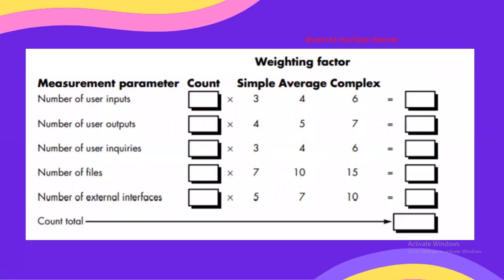We are going to have two things: direct measures and software complexity values or factors. We use five direct measures or countable measures for calculating the function points. These five measurement parameters are: number of user inputs, number of user outputs, number of user inquiries, number of files, and number of external interfaces.